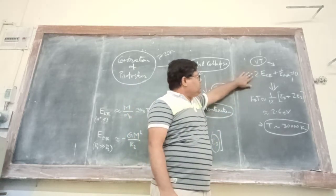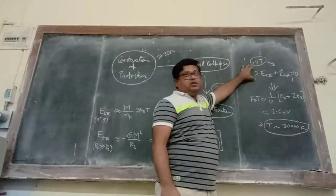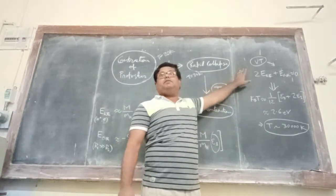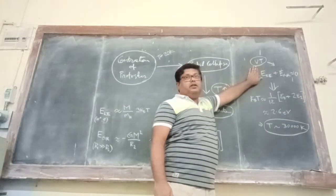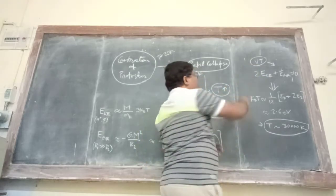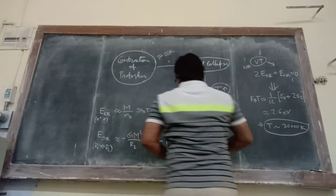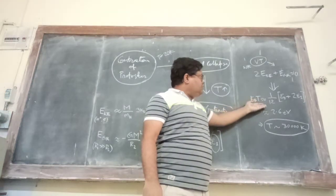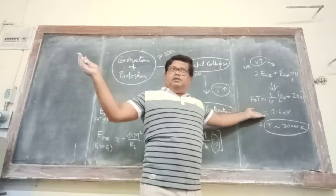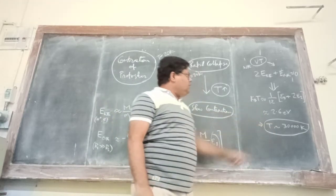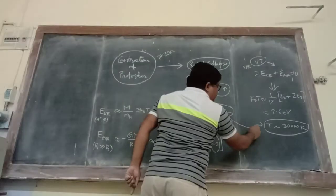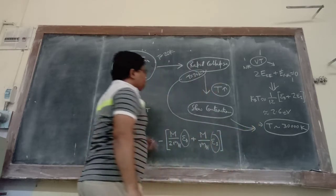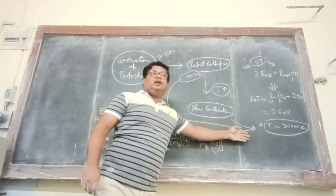Using the Virial theorem and equating, we get a temperature of around 30,000 Kelvin. So look at what has happened: temperature has started increasing from T = 20 Kelvin up to T₂ = 30,000 Kelvin. And this is where slowly the overall opacity starts to increase. The matter will slowly and gradually become opaque, and now gas pressure also starts to increase.